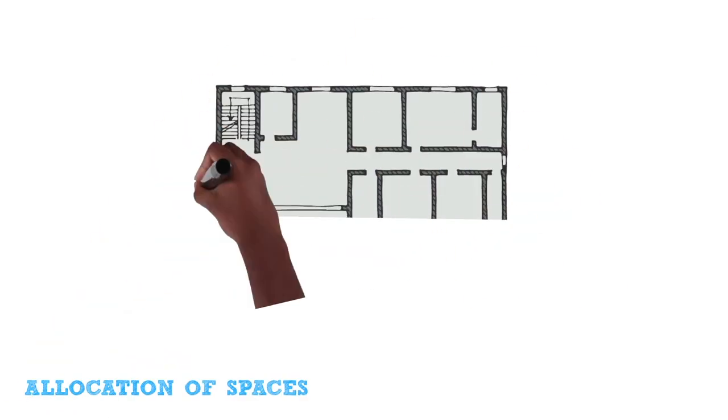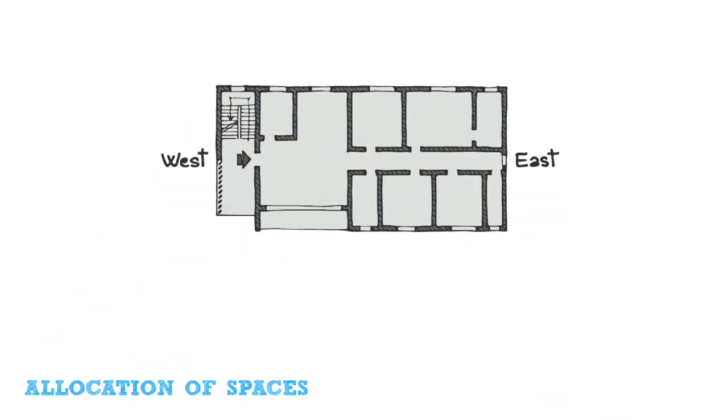Services such as toilets, staircases, lifts, and lobbies should be located on the east- and west-facing facades to act as buffer zones and prevent heat gain.